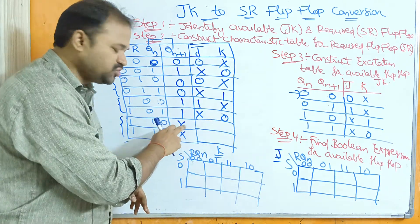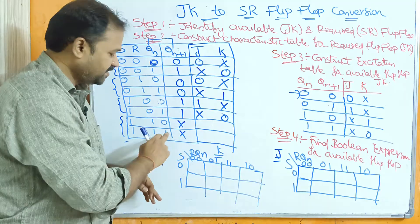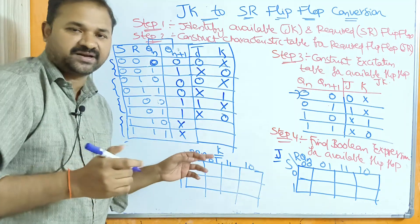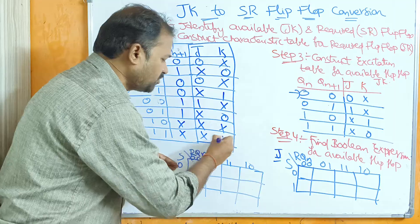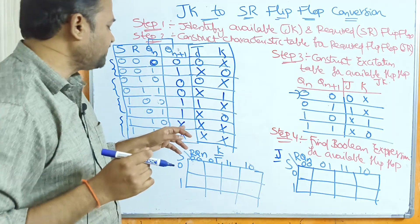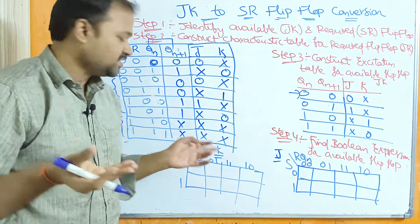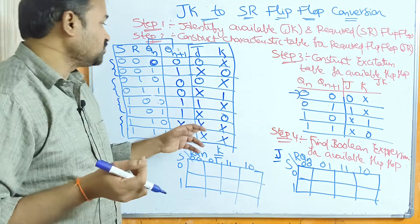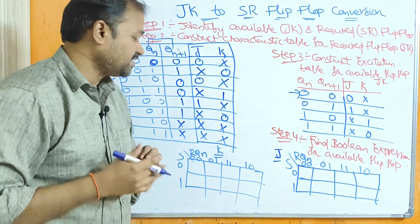If you observe the last two rows where the SR combination is 1,1 — that is the don't care condition — the Qn+1 value may be either 0 or 1. Because Qn+1 is don't care here, it may be either 0 or 1. So that's why the J and K outputs for those rows are also don't care.